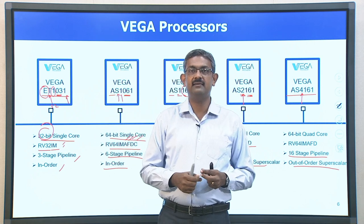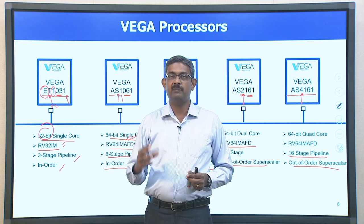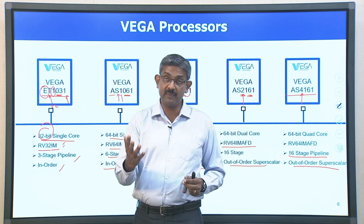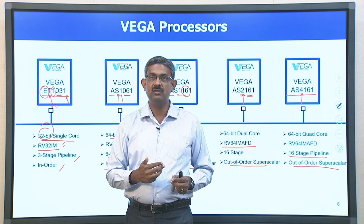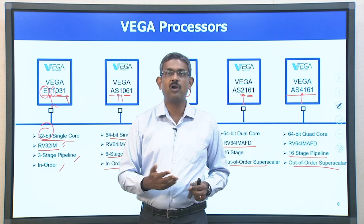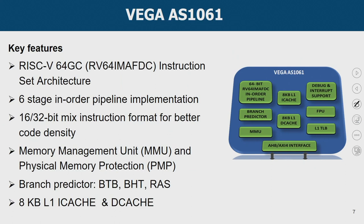So you can see that there exists a class of processors beginning from simple in-order pipelines with 32-bit architecture, moving all the way to 64-bit architecture, and then expanding to out-of-order processors — unicore out-of-order, dual-core out-of-order, and quad-core out-of-order. Let us now take the case of the Vega AS series processor: it is an application processor with 64-bit data width, unicore, and a 6-stage pipeline.